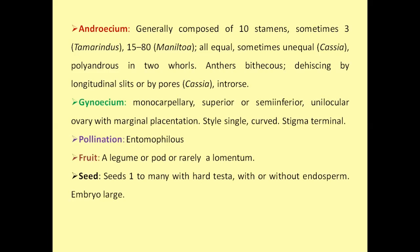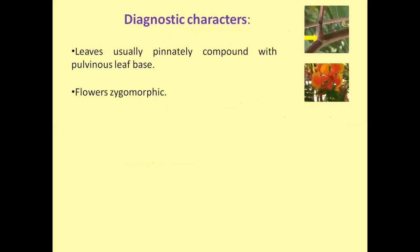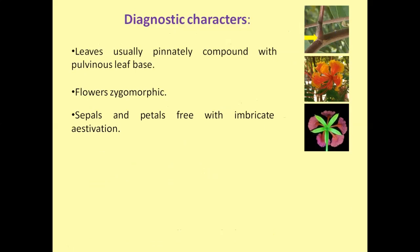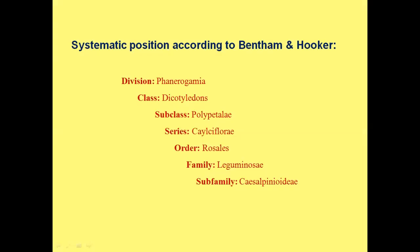Now we will discuss the diagnostic characters of this family. Leaves are usually bipinnate with pulvinate leaf base. Flowers are zygomorphic. Sepals and petals are free with imbricate aestivation. Stamens ten, polyandrous condition. Gynoecium is monocarpellary, unilocular, superior ovary with marginal placentation, and fruit a legume or pod.